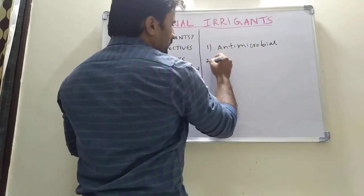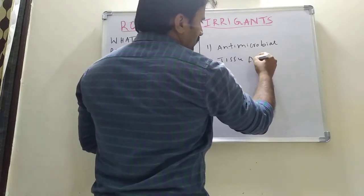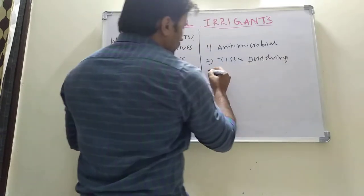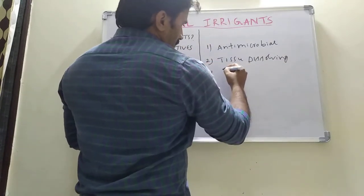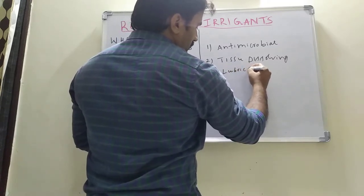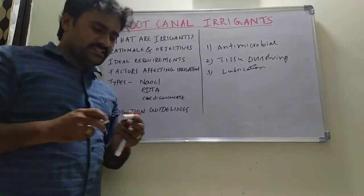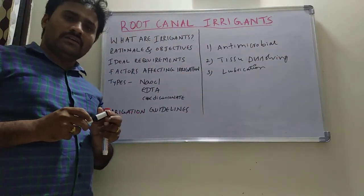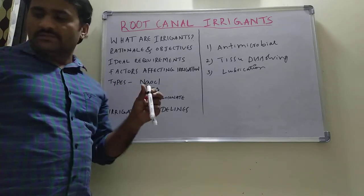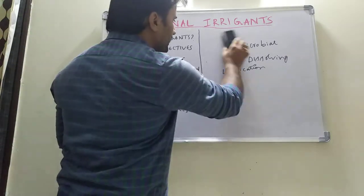To summarize the ideal requirements: first, antimicrobial property; second, tissue dissolving property; and third, lubrication — they must provide lubrication for easy instrumentation with the files. These are the ideal requirements for a root canal irrigant.